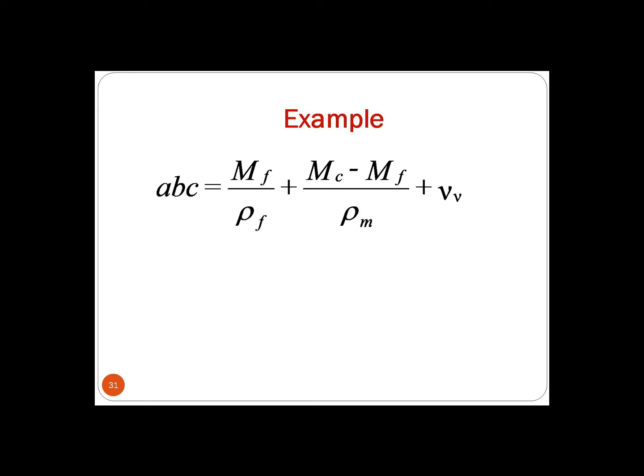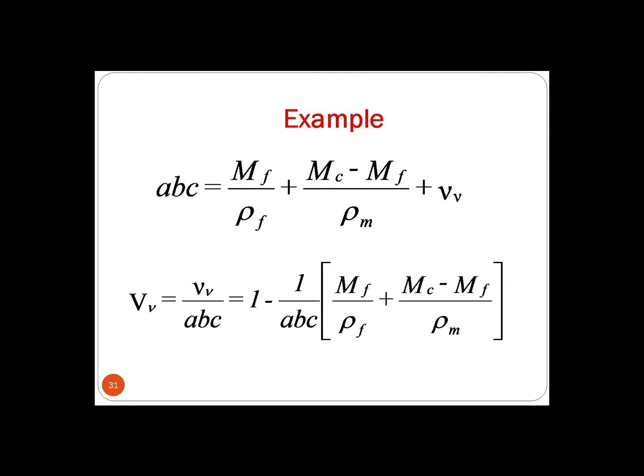Equating the above two equations, the volume of the cuboid A times B times C equals MF over rho F plus (MC minus MF) divided by rho M, plus the volume of voids VV. Therefore, the volume fraction of voids capital VV equals small VV divided by (A times B times C), which gives 1 minus (1 divided by ABC) times [MF over rho F plus (MC minus MF) divided by rho M].